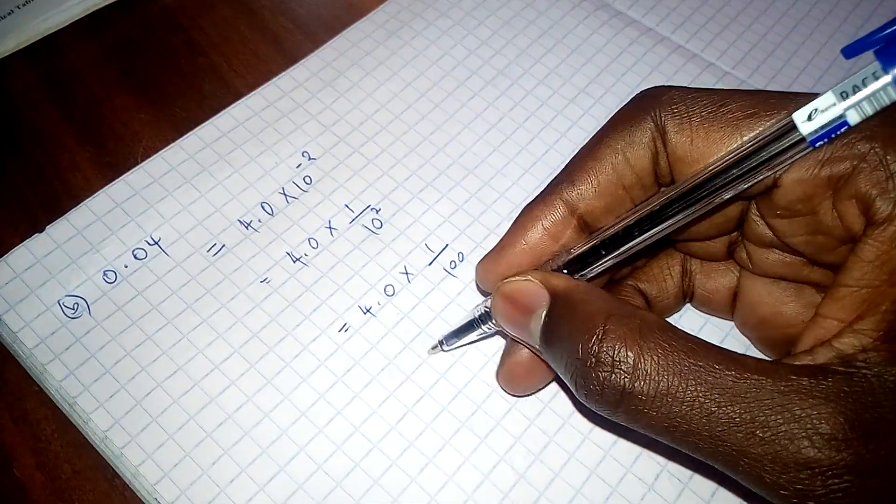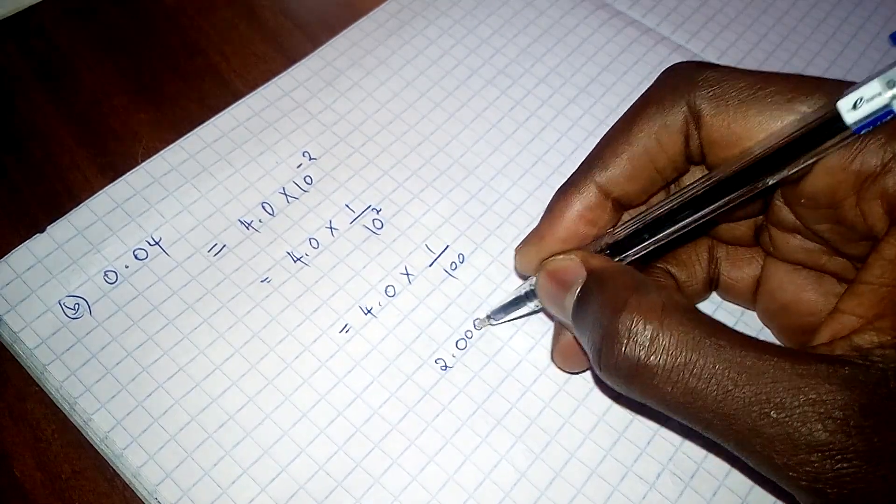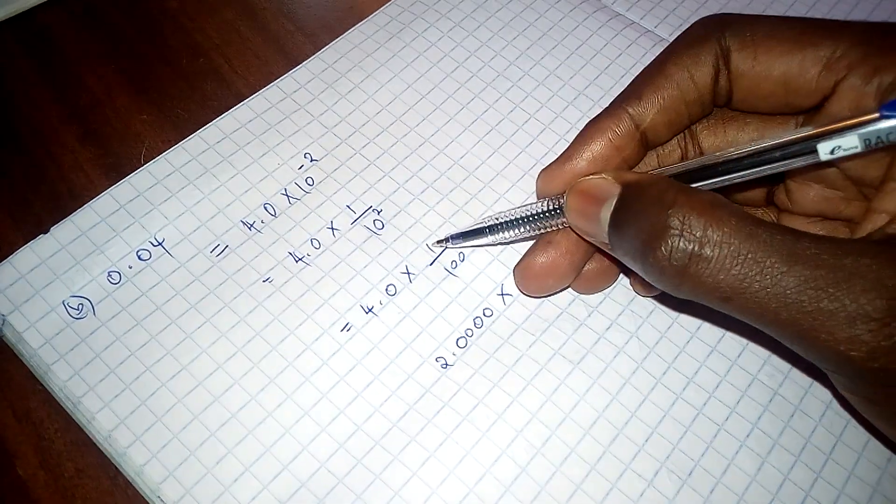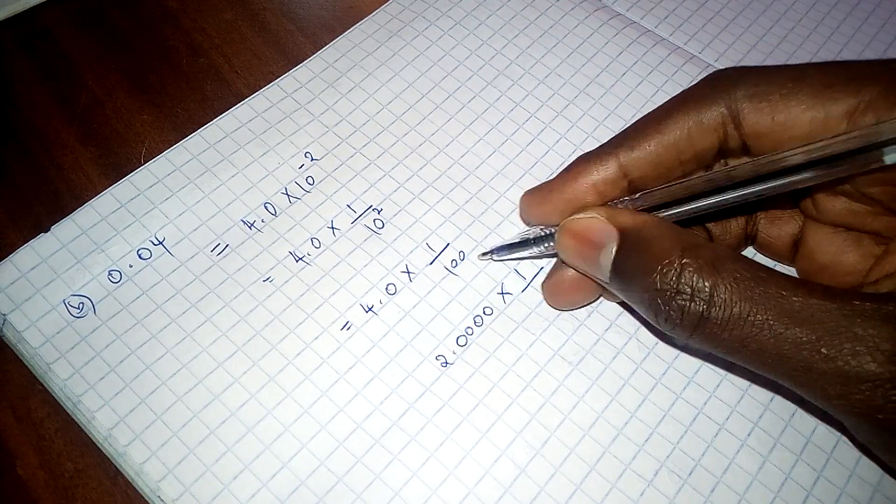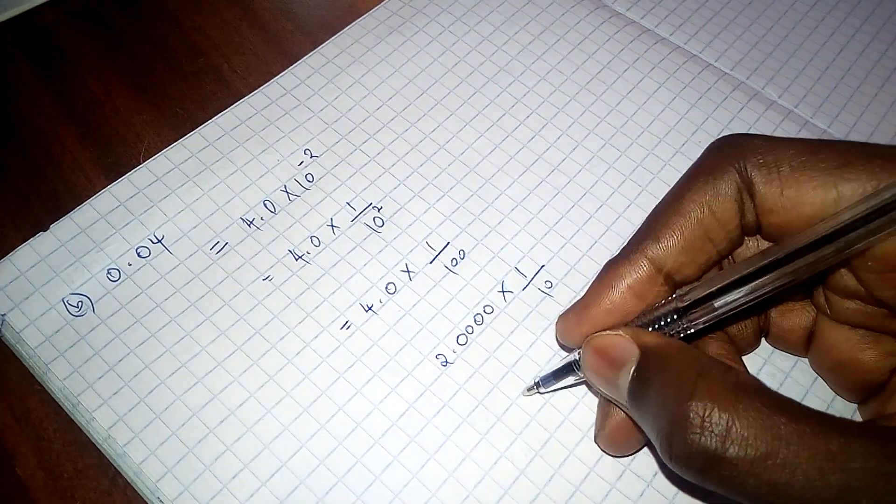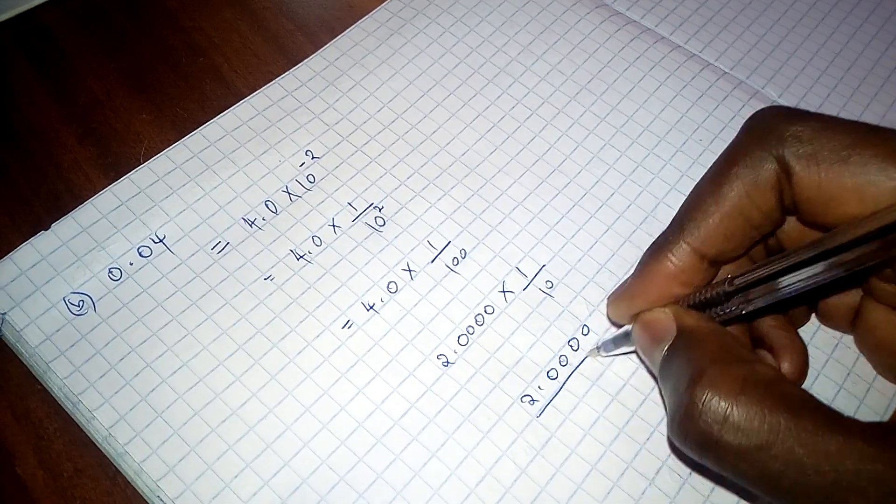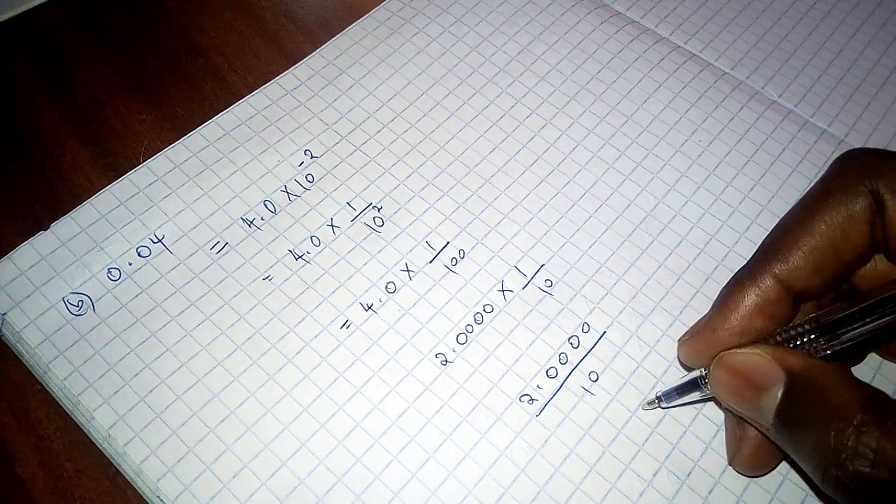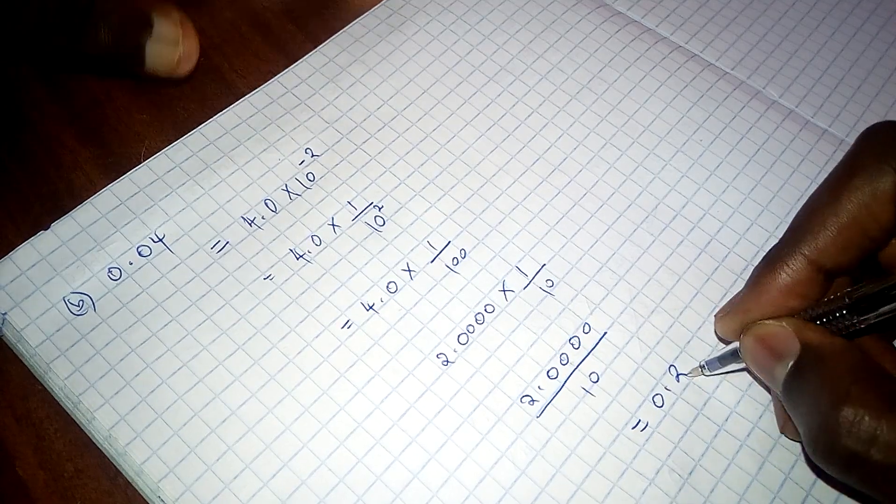So we have this as 2.0000 times. The square root of 1 is 1 and the square root of 100 is 10. So we are going to have 2.0000 divided by 10. So this is 0.2.